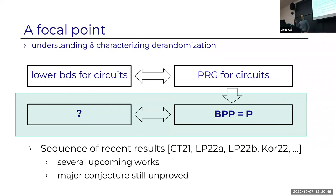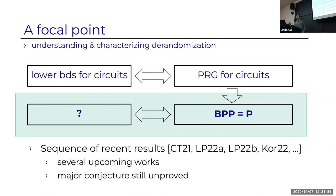The focal point of studying this non-black-box type of derandomization is: we knew that lower bounds for circuits are equivalent to PRGs for circuits. We're now looking for the right hypothesis to characterize the statement BPP equals P—trying to understand what it's equivalent to, since we don't know it's equivalent to circuit lower bounds. There's been a sequence of recent results with several equivalences proved, and another equivalence strengthening them coming up. There's also a natural major conjecture from a paper of mine with Lijie that got attention but remains unproved.